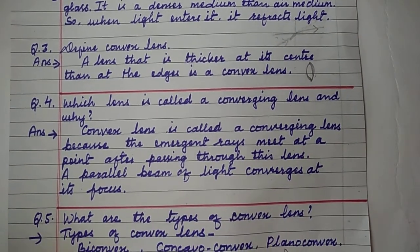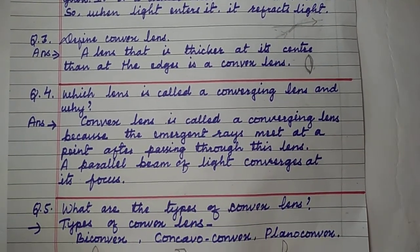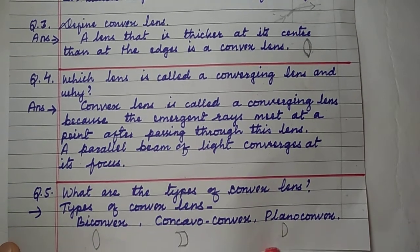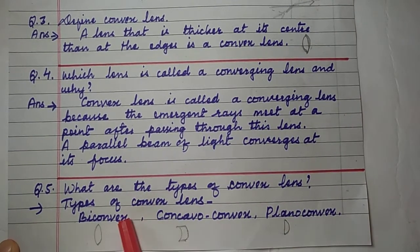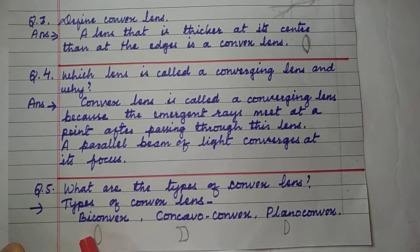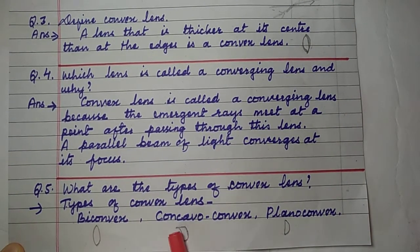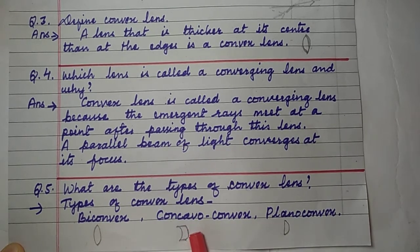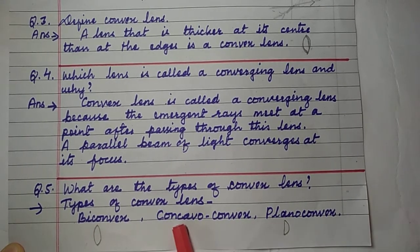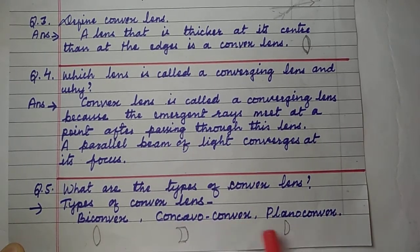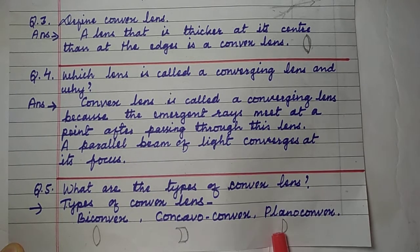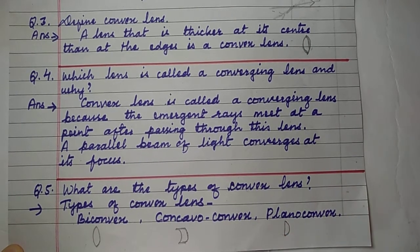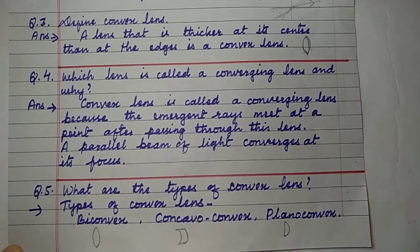What are the types of convex lens? The types of convex lens are: biconvex — both sides are convex; concavo-convex; and plano-convex — one side is straight and another side is spherical.